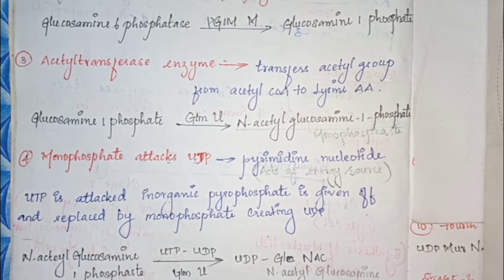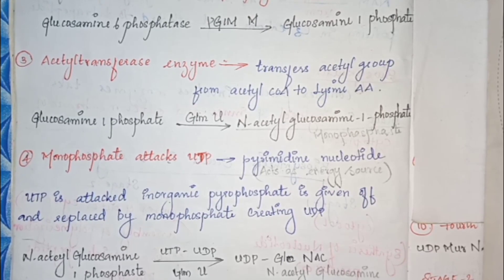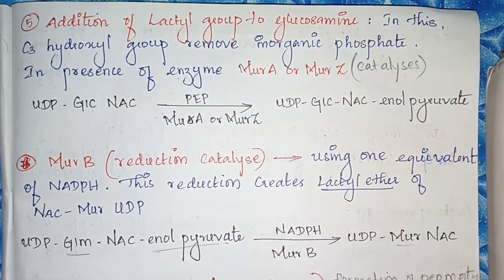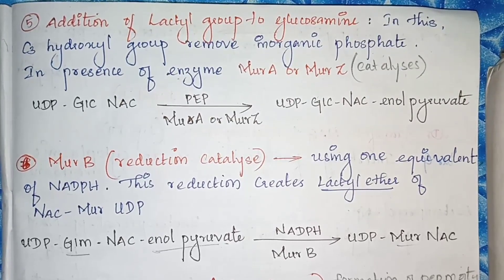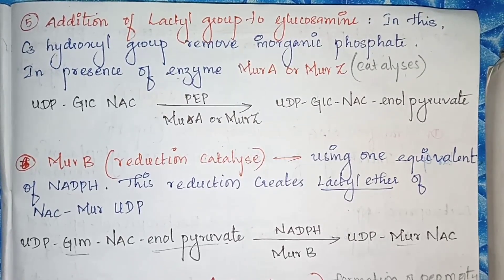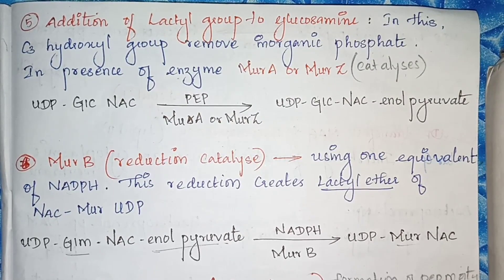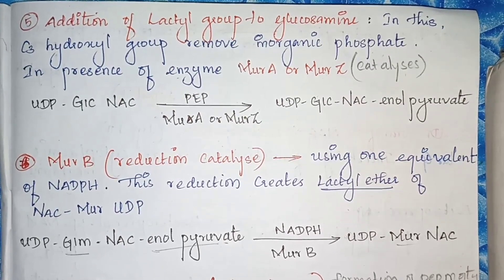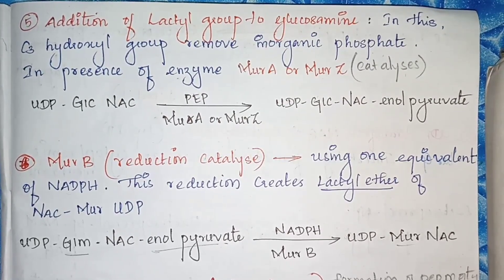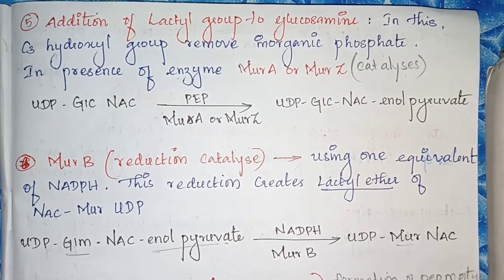UDP-N-acetylglucosamine is also an important component in chitin and glycoproteins in eukaryotes. This precursor helps initiate the biosynthesis and the formation of the amino acids present in NAM. NAM consists of amino acids cross-linked by peptide bonds, forming a tetrapeptide, and a pentapeptide is formed with the help of this precursor.